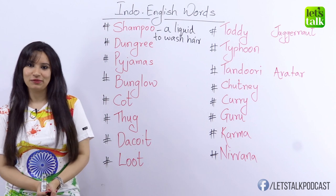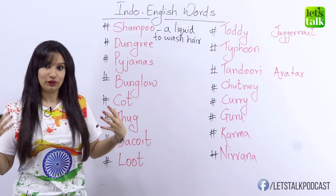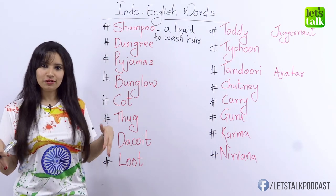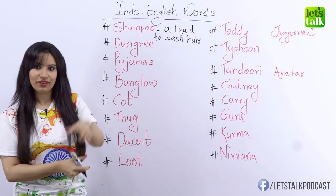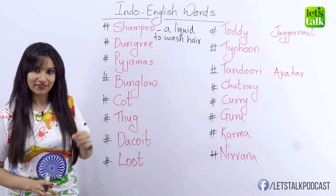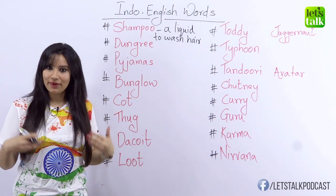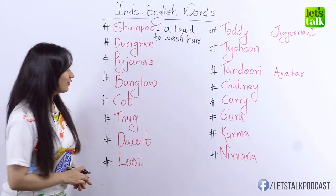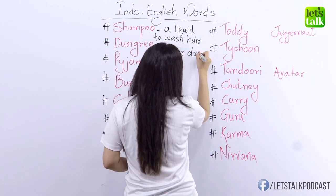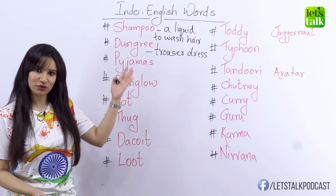The next word is dungary. Hindi has actually passed into the language of clothes and styling. Dungary is a type of dress — a trouser essentially — but it has a part that covers your chest and two straps on the back. This special type of dress was made from a very coarse fabric called dungary. I'm sure you've heard this word before and many of you might even be wearing it, not knowing it comes from Hindi.